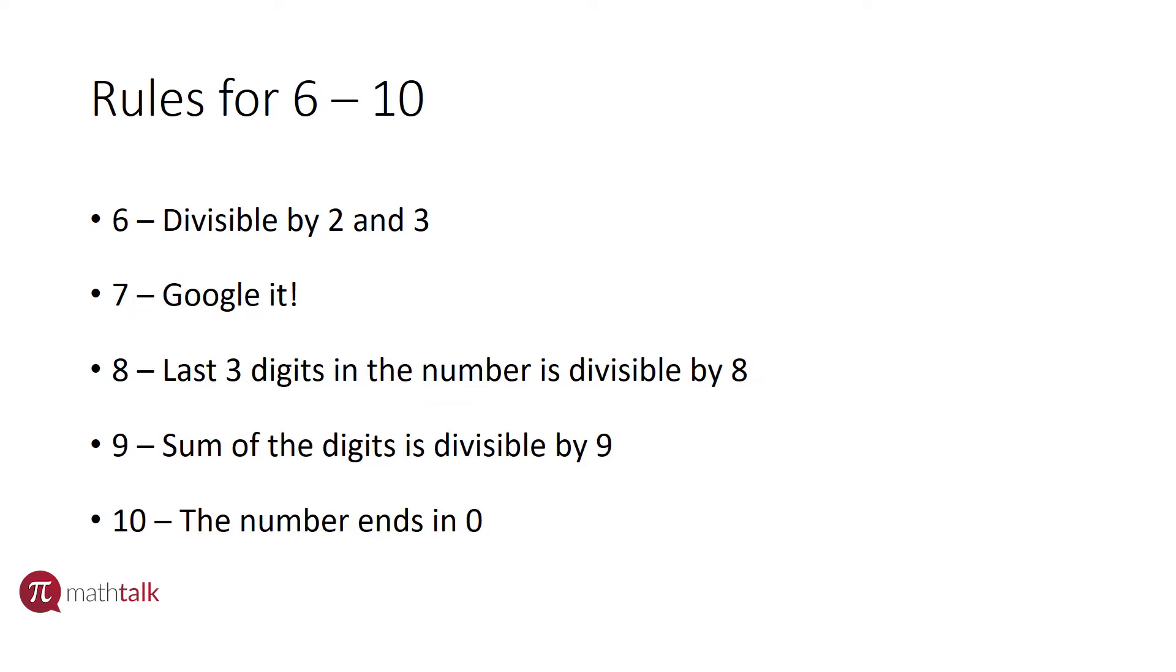All right, the rule for eight says you take the last three digits of the number. If those last three digits are divisible by eight, then the number itself is divisible by eight. It's similar to the rule for four, except that we're looking at the last three digits instead of the last two digits.